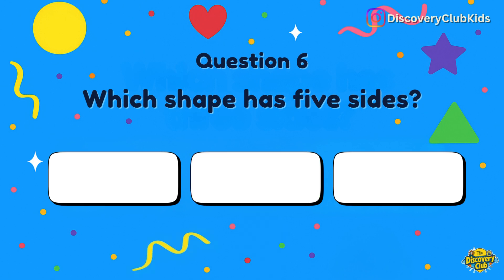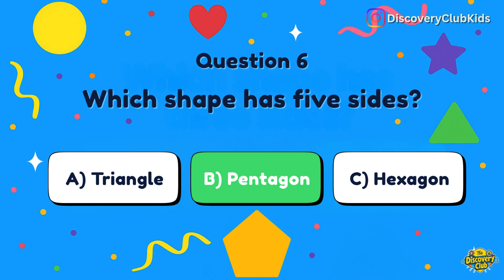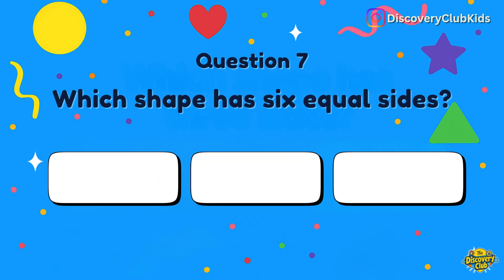Question 6: Which shape has five sides? Your choices are triangle, pentagon, or hexagon. The answer is pentagon.